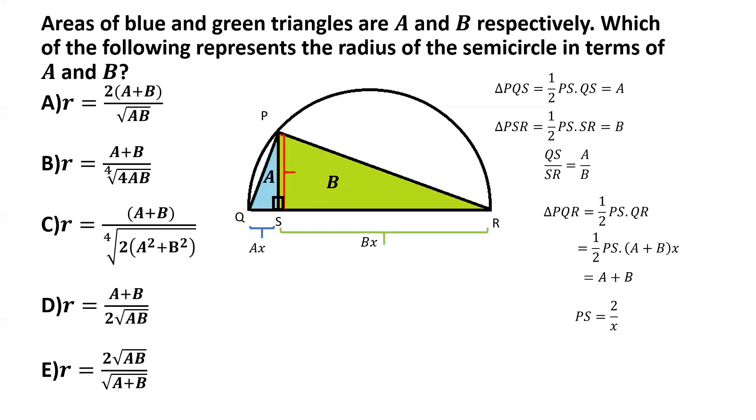So we can indicate that in the figure that PS is equal to 2 by X. Now, we'll take advantage of the property of similarity of triangles PQS and PSR. And it's pretty elementary to show that these two triangles will be similar. And I've shown that in an earlier video.